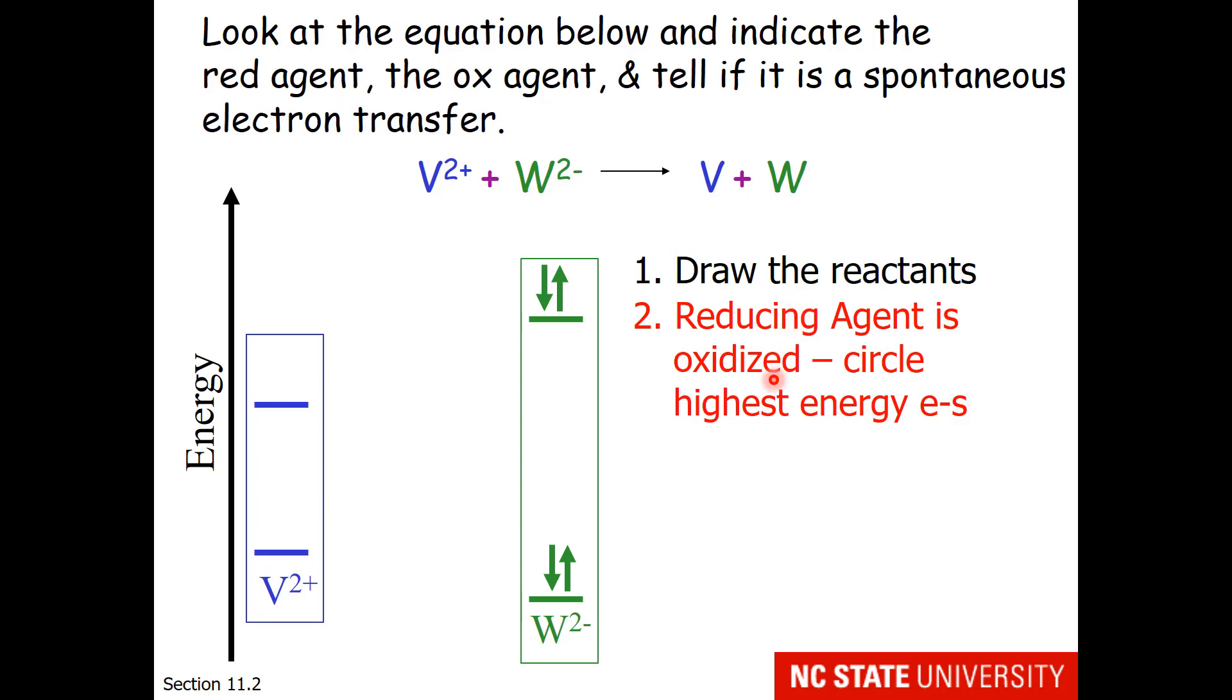My next step is to find the reducing agent in this reaction. The reducing agent is the one that is oxidized. We need to find where oxidation happens. Oxidation is losing electrons, and oxidation is getting more positive. Now the oxidation states of these materials are very easy to determine. For the V2 plus, it's just plus two. For the W2 minus, it's minus two. For neutral V and W, the oxidation state is zero. So which one is being oxidized? Well, I hope you think that it's the W2 minus going to W zero. This is going up in oxidation state. So this is my reducing agent. So I want to circle the highest energy electrons on my reducing agent.